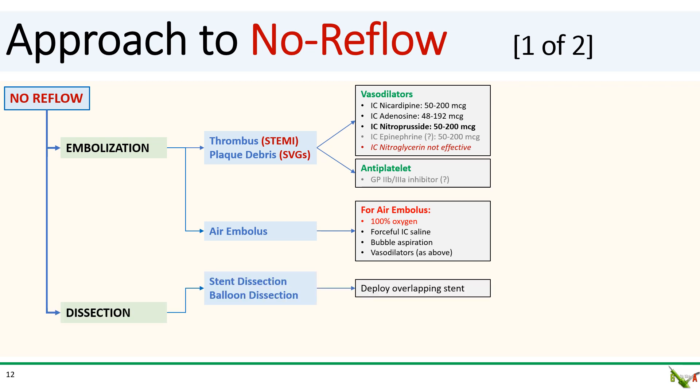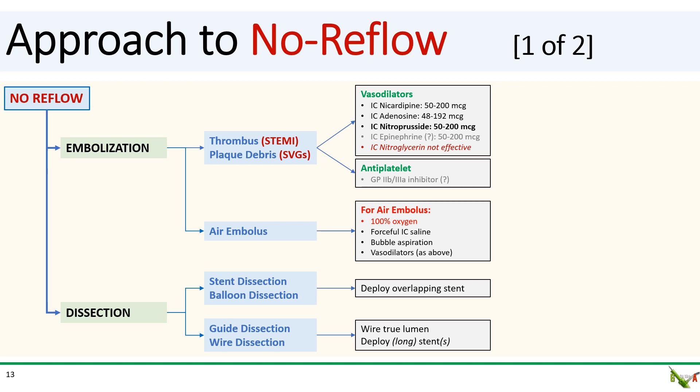The other major cause of no reflow is dissection. For stent and balloon dissections, the treatment is easy — you've already got a wire down, so just deploy an overlapping stent to cover the dissection. Make sure your stent ends in healthy tissue well beyond the end of the dissection. On the other hand, if you had a guide or wire dissection, it can be a lot trickier. You'll need to get your wire back into true lumen and deploy long stents.